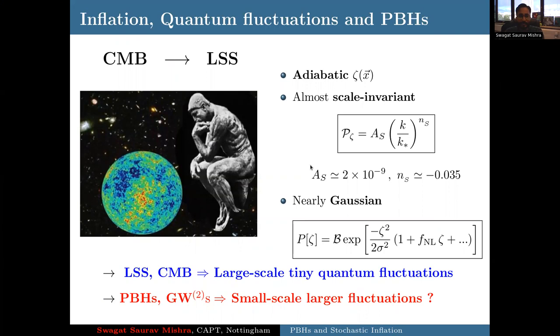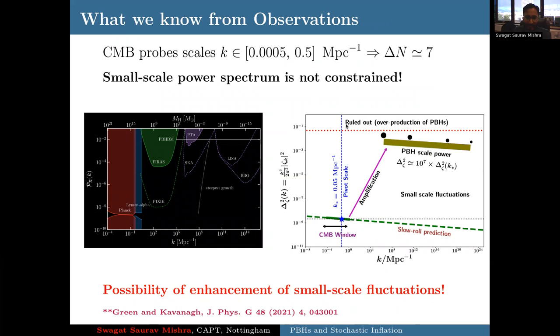The topic I want to focus on is whether we can form primordial black holes as well as maybe some second order gravitational waves from the same mechanism, that is quantum fluctuations during inflation. What you would need is to have large quantum fluctuations at small scales to form these interesting objects such as primordial black holes. CMB probes scales ranging over seven e-folds of expansion during inflation, covering about 20 megaparsec to the size of the observable universe.